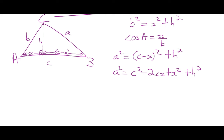Now we say: what can we say about X squared plus H squared? It's equal to B squared. And what can we say about X? X is equal to B times the cosine of A. So what we want to do is get rid of the X and the H, because they're just an artificial construct we made by dropping that altitude down. I can replace X with B times the cosine of A, and replace X squared plus H squared with B squared.